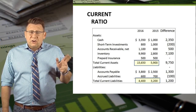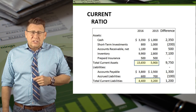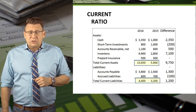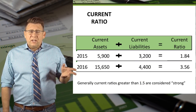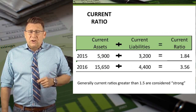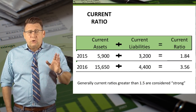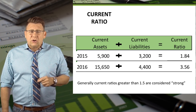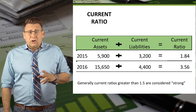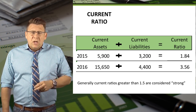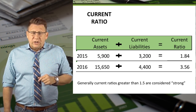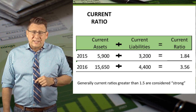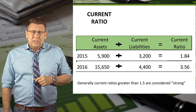Here is the current asset and liability section of a sample company's balance sheet. We'll use the highlighted current assets and liabilities to determine the current ratio. For 2015, current assets divided by current liabilities gives us a current ratio of 1.84. For 2016, current assets divided by current liabilities gives us a current ratio of 3.56. Another way to think about this ratio is the company has $3.56 of current assets for every $1 of current liability.